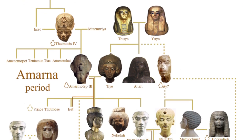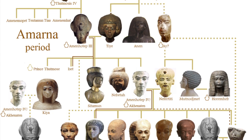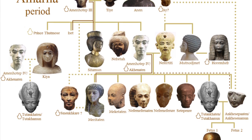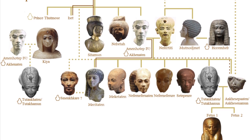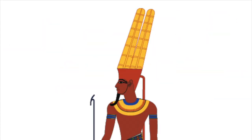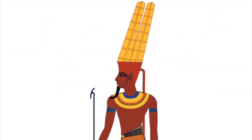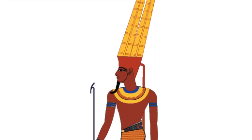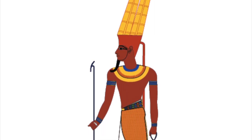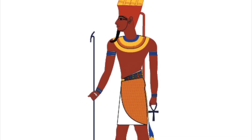During Amenhotep III's reign, which was 1386–1351 BCE, Egypt stayed consistent with their polytheistic beliefs and serious royal art styles. However, there was one god that was lord of all and received significantly more praise than the rest, especially in ancient Egypt's capital, Thebes. And this god's name was Amen.